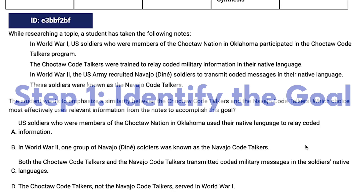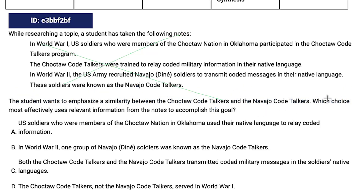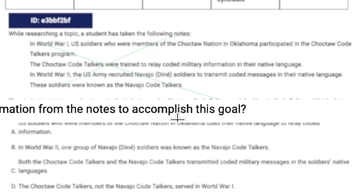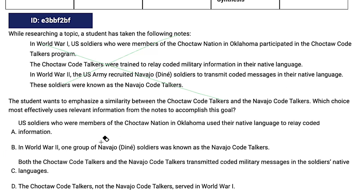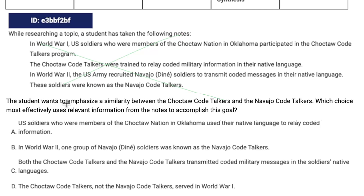Step one is going to be to identify the goal. We're going to skip our notes and go straight to the goal, because every one of these questions is going to say something along the lines of 'which choice most effectively uses relevant information to accomplish this goal.' In this case, it says the student wants to emphasize a similarity between the Choctaw Code Talkers and the Navajo Code Talkers. So the main focus here is to emphasize a similarity.